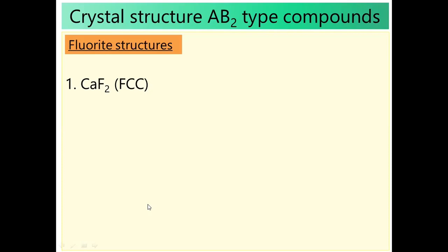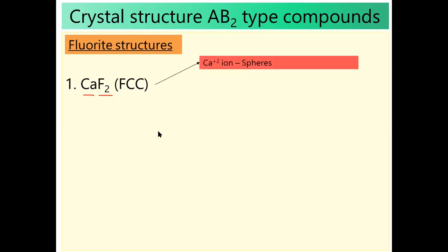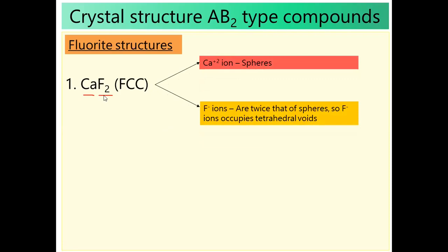Calcium occupies the sphere position and fluorine occupies the void position. Fluorine is on the extreme right side — upper element — hence it should be smaller in size, so it will occupy the void position. The void should be the tetrahedral void only. Ca²⁺ occupies sphere position; fluoride occupies tetrahedral void position. This is the fluoride structure.